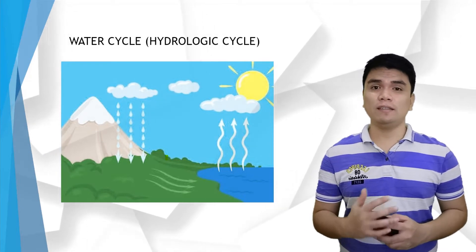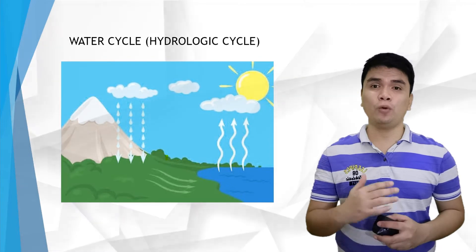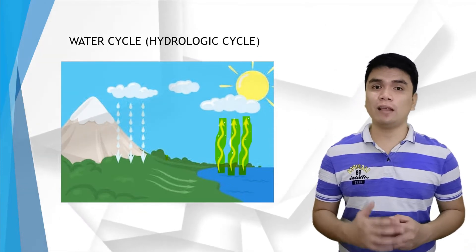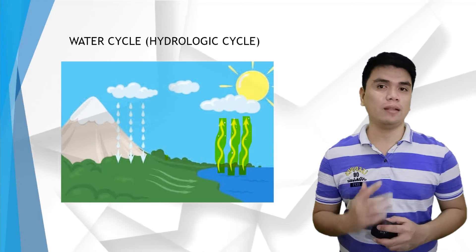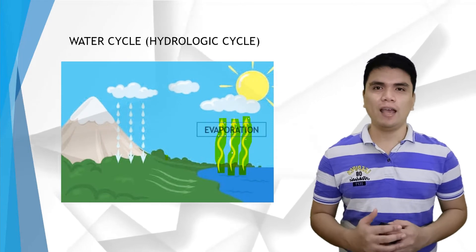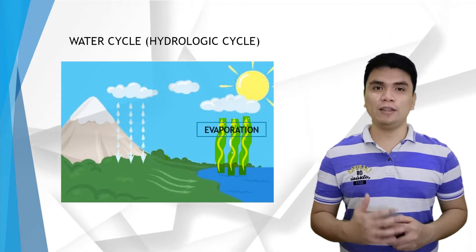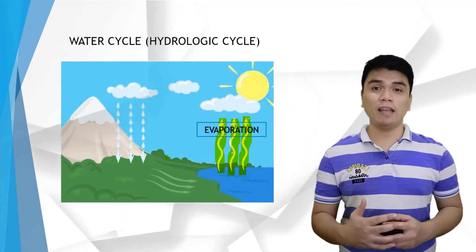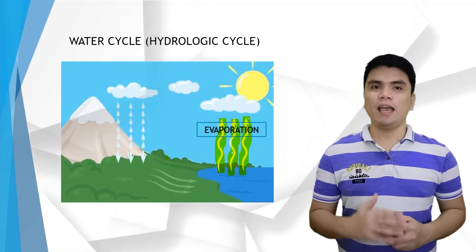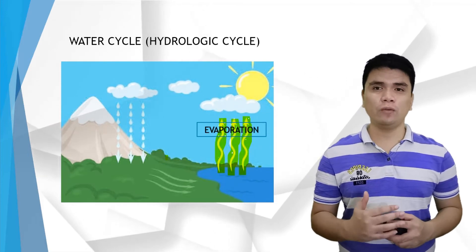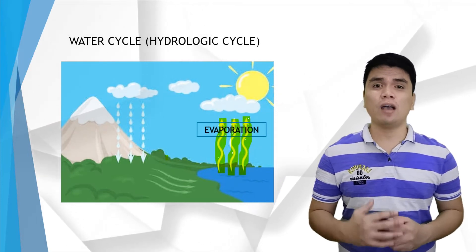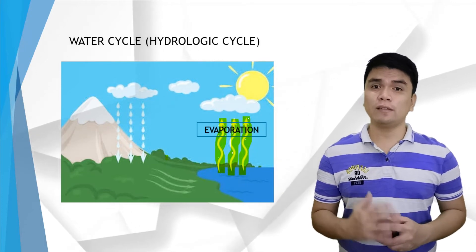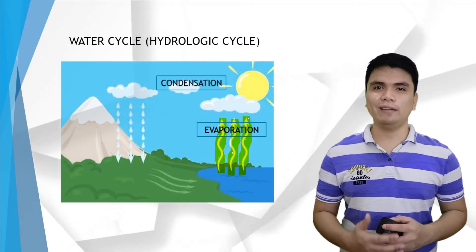Evaporation is a process where water at the surface turns into gas through heat energy from the sun. As water vaporizes into water vapor, it rises up in the atmosphere and changes into very tiny particles of ice or water droplets. This process is called condensation.